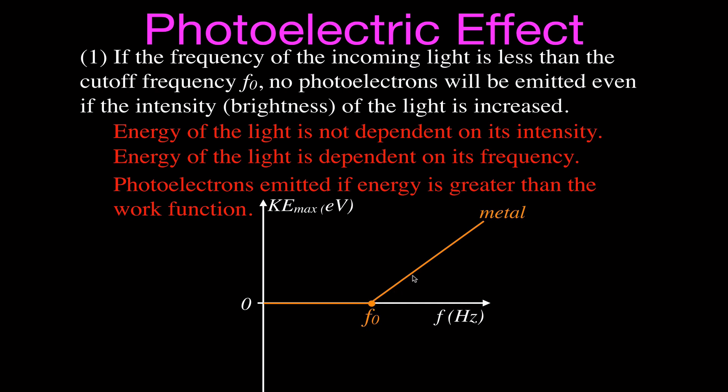The extra energy left over after overcoming the work function will be given to those electrons as kinetic energy — as velocity. So below the cutoff frequency no electrons are released, and above it the leftover energy after overcoming the work function is given to our photoelectrons as kinetic energy. That is point number one — understanding the difference between frequency and intensity.